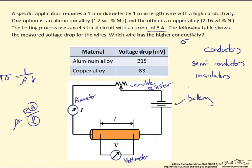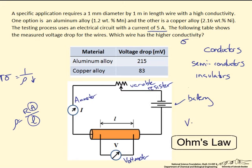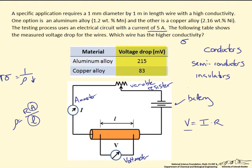We are going to use a very familiar equation: Ohm's Law, which states that voltage is proportional to current times resistance. We know the voltage drop for our two materials, we are given the current in the system, and we can calculate the resistance. So let's go ahead and do that.